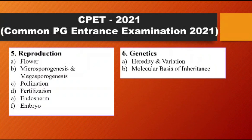The sixth point is Genetics. First, study heredity and variation — Mendel's laws, from which mathematical questions can also come — then back cross and test cross problems. Cover dominance, multiple allelism, pleiotropy, chromosome linkage, crossing over, mutation, and sex determination. The second part is molecular basis of inheritance: DNA, RNA, replication, transcription, translation, operon model, gene action, and genetic code.